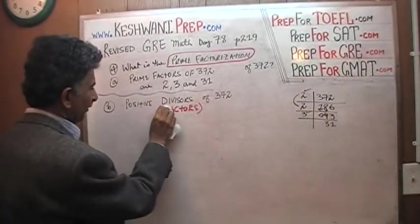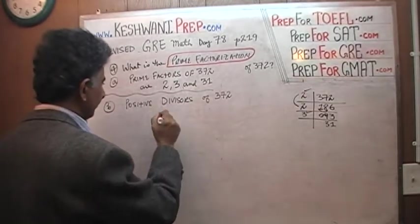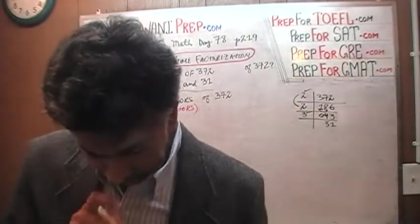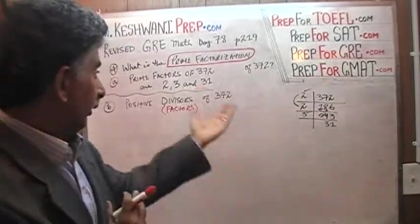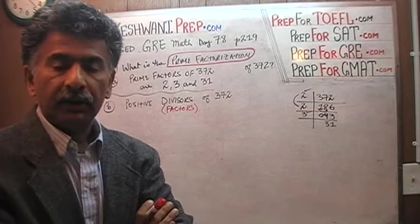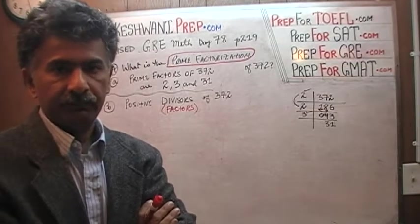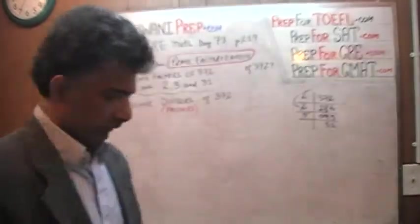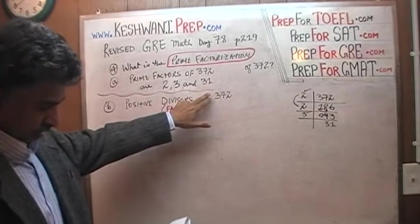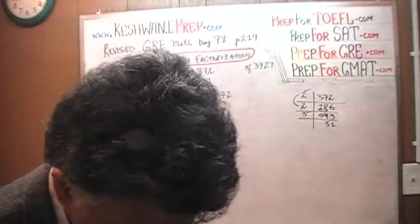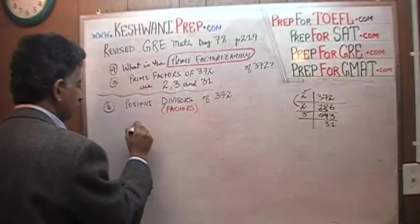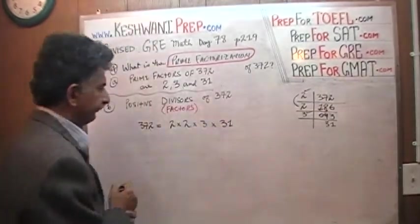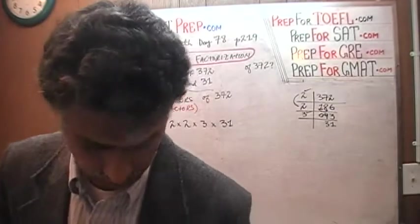Our job is to locate all the positive numbers. It must say positive numbers because otherwise we would have to worry about negatives as well. What are the positive divisors of 372? If you just sit there and do it haphazardly, willy nilly, you are going to miss some. You have to have a system so that you don't miss any at all. We know the prime factors are 2, 3, and 31. We know that 372 equals 2 times 2 times 3 times 31.